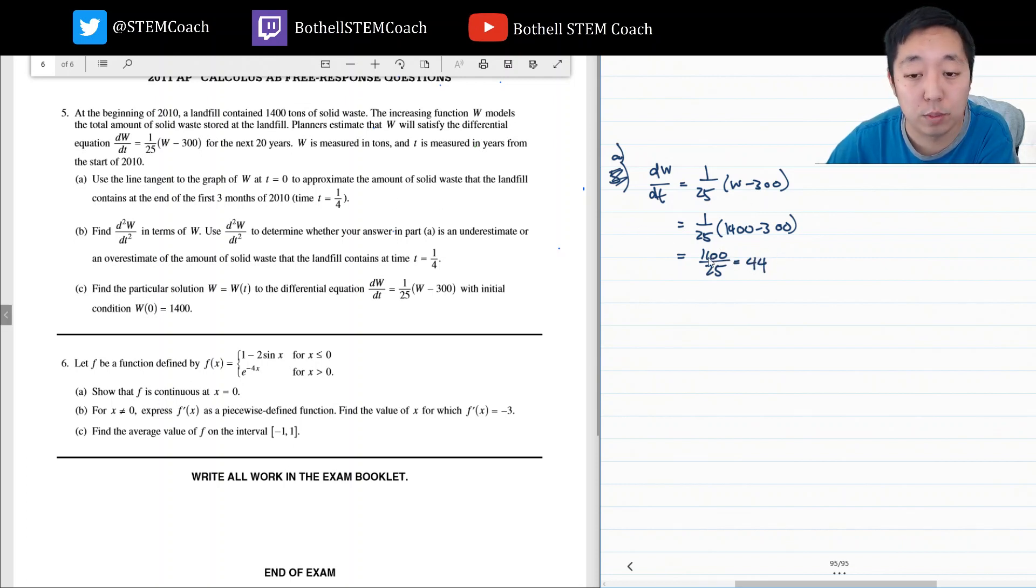But I want the tangent point. So the point we're interested in is the point zero and 1,400, right? Because that's where we started off. This is T and this is W of T. All right, that's my point. So my equation, my tangent line equation is W minus 1,400 equals M times T minus zero. In this case, we found M was 44. So W equals 44T plus 1,400.